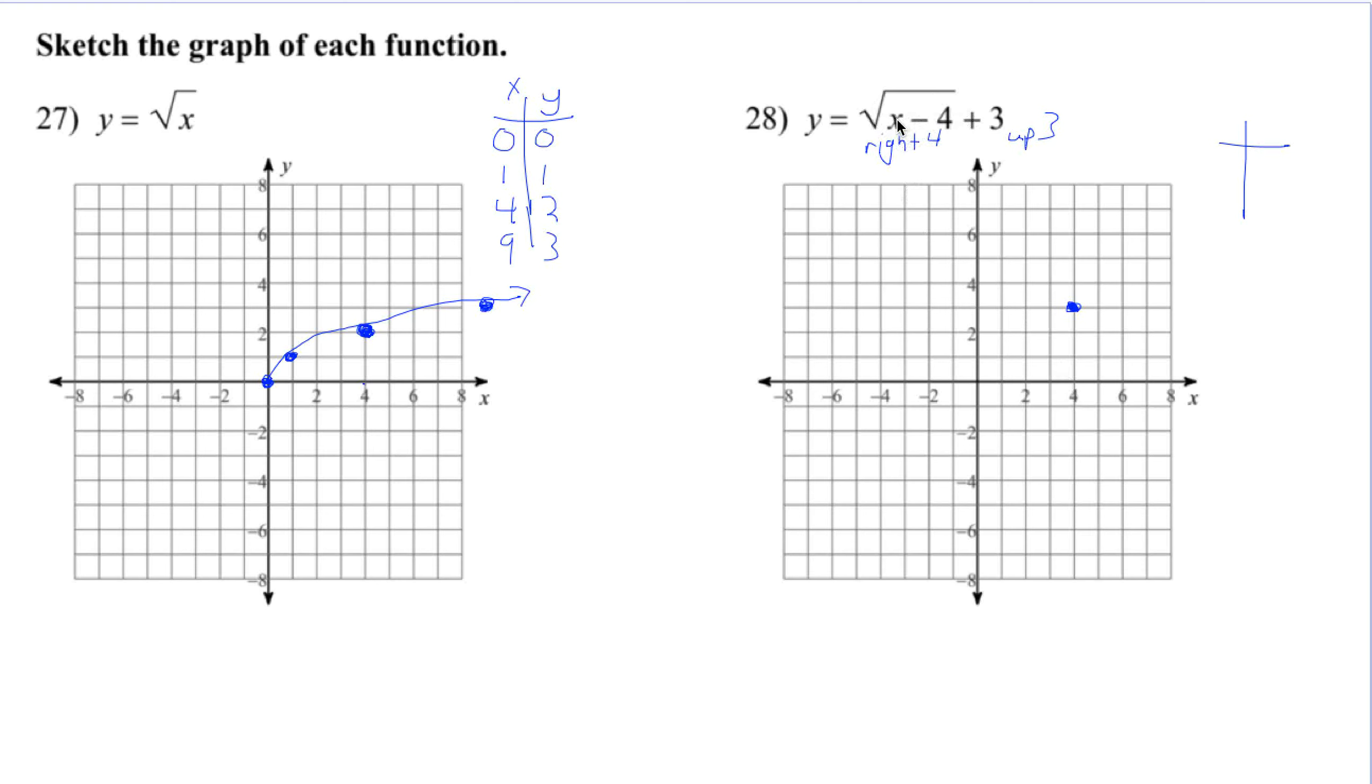So if we plug in 5, we'll get 5 minus 4 is 1. Square root of 1 is 1 plus 3 is 4. So we have the point 5, 4. And maybe if we could get a 4 in here, that would be good. So what value of x would give us a 4 in the square root?